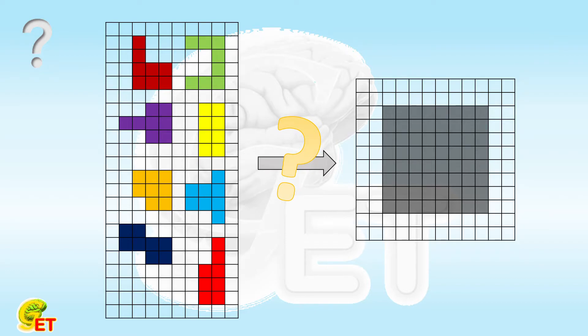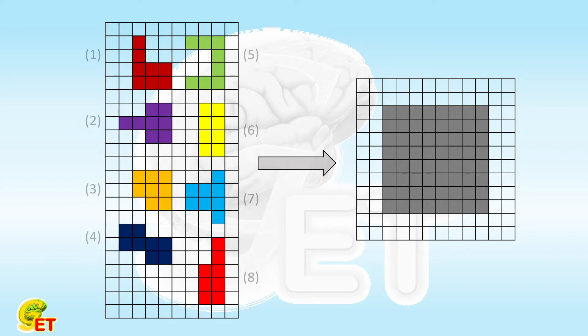Let's give one solution here. To better illustrate it, we first label those puzzles from 1 to 8. It looks like number 4 has the most irregular shape, which should be difficult to address, so we try to start from it.